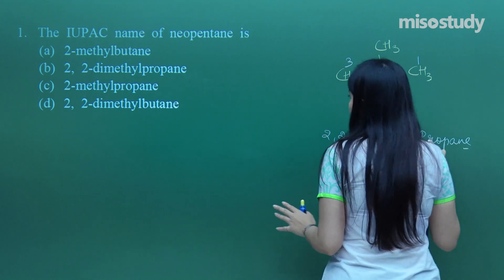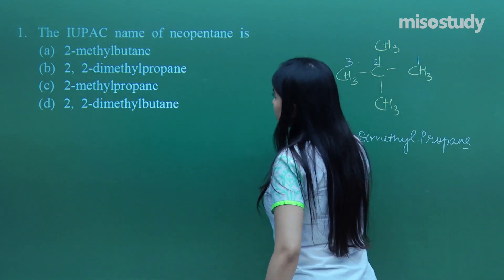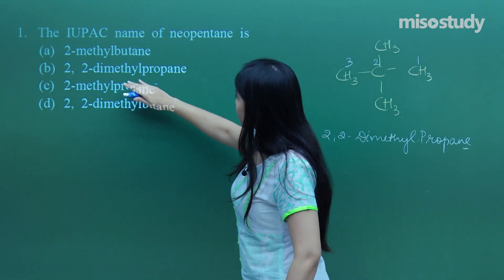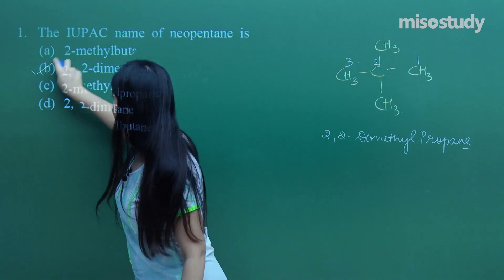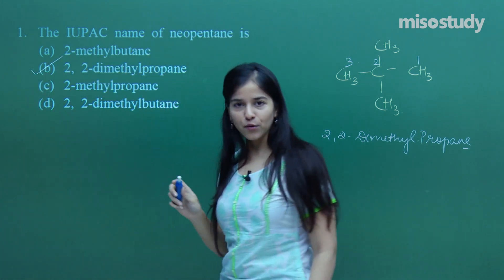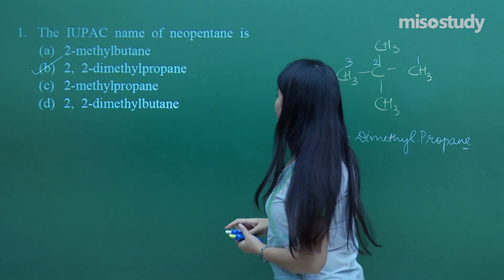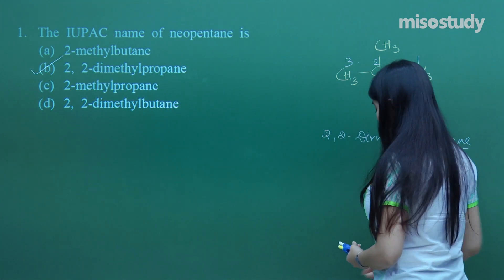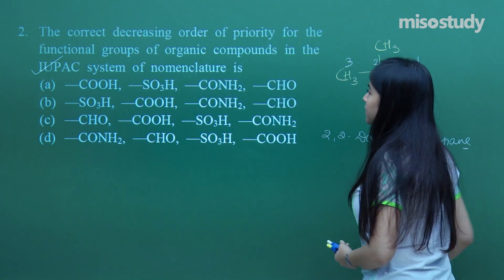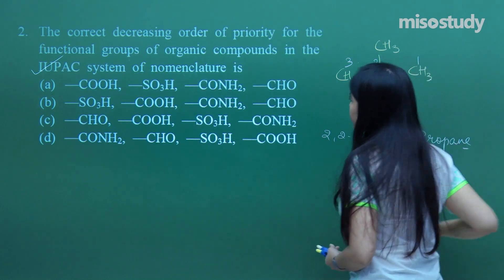Do we have the option 2,2-dimethylpropane? Yes, we have got it. So the answer is B. Now let us just move on to the very next question.